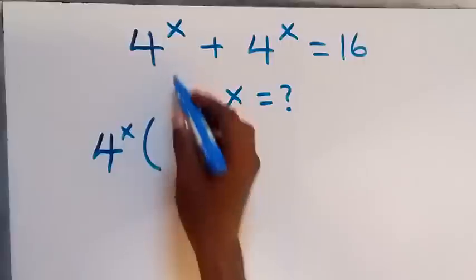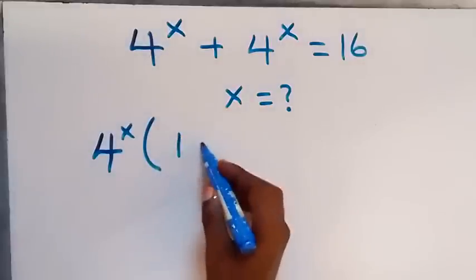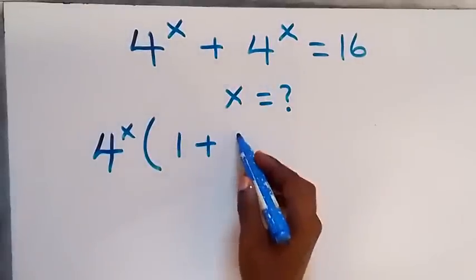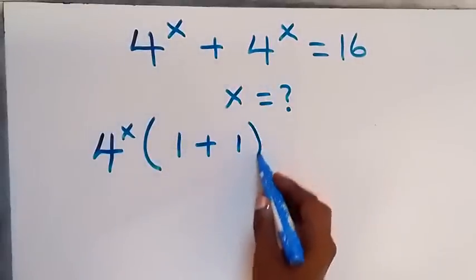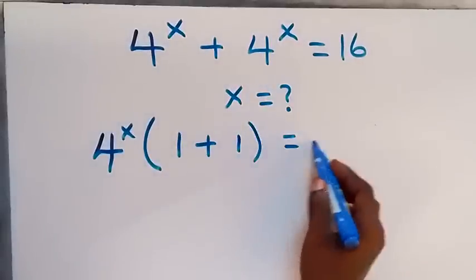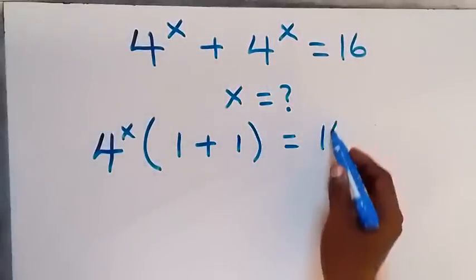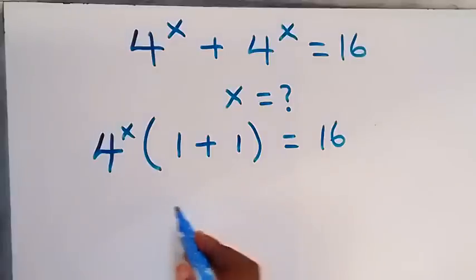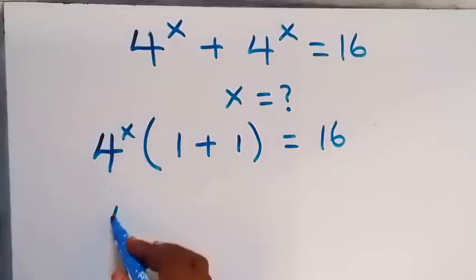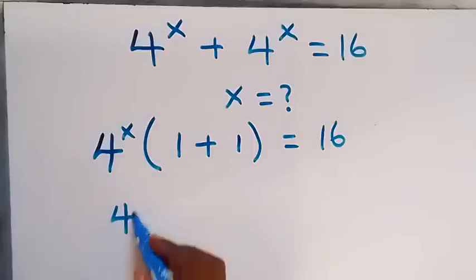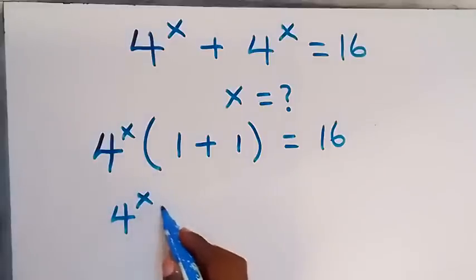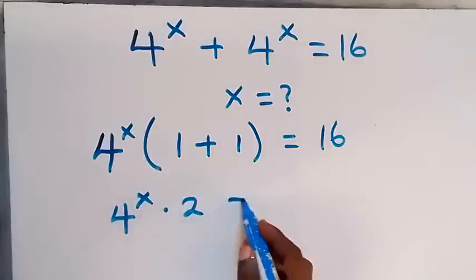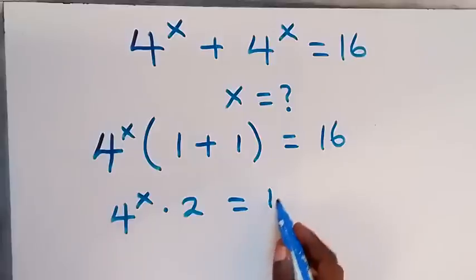After factoring, we remain with 1 plus 1 inside, which equals 16. Then 1 plus 1 is 2, so we have 4 raised to the power x multiplied by 2 equals 16.